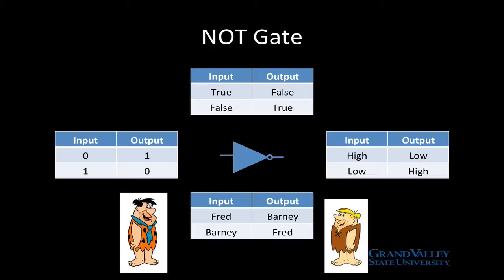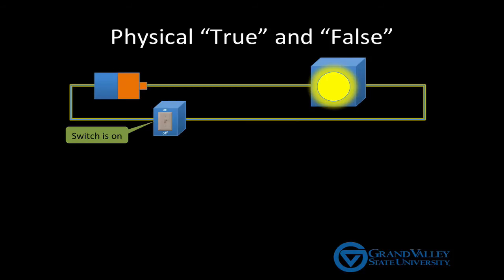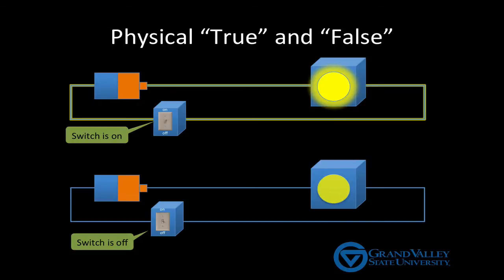To physically implement a gate, however, we need to pick two physically distinct conditions. There are many possible choices, but for this video, I'm going to use these two: the presence of an electric current and the absence of an electric current.